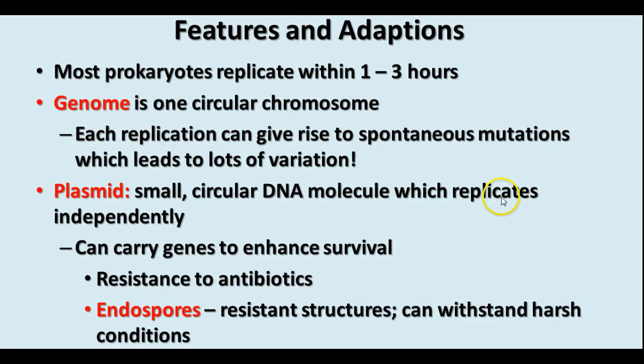Features and adaptations found in various kinds of bacteria: most prokaryotes can replicate within one to three hours, and in 24 hours you can go from one cell to millions of cells. The genome of a bacterium is one circular chromosome, and there have been a lot of variations because it can easily mutate since there's only that one chromosome.